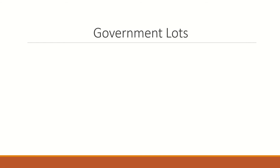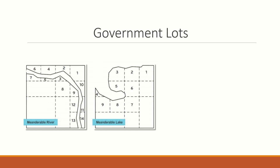Finally, we have government lots. These are usually irregular portions of sections formed by meandered bodies of water. As you can see, we have a meandered river and a meandered lake. The government lots are labeled from 1 to 14 within this diagram. A quick note: the numbering of government lots starts at one in every section and does not continue to the next.